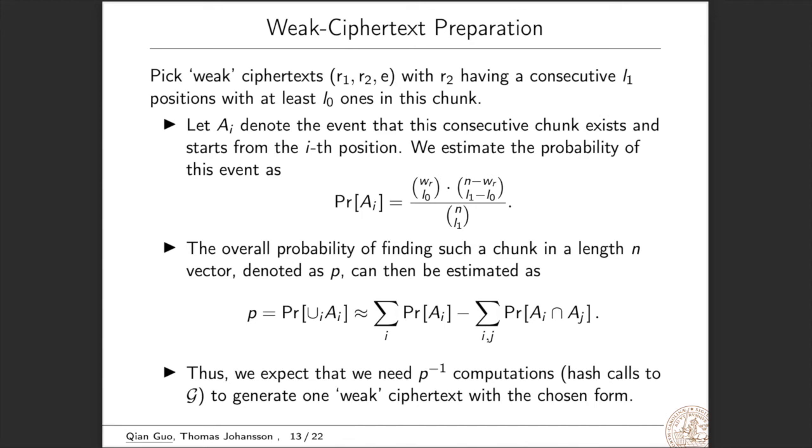As we have discussed in this section of basic ideas. For weak ciphertext preparation, we pick weak ciphertext r1, r2, e, with r2 having a consecutive L1 position with at least L0 ones in this chunk. So we need to estimate the complexity for getting such ciphertexts. Let Ai denote the event that this consecutive chunk exists and starts from the i-th position. Then from combinatorial formulas, we estimate the probability of the event as this. So, the overall probability of finding such chunk in a length n denoted as P can then be estimated as the union of these events. Thus, we could expect that we need the inverse of P computation hash calls to the hash function G to generate one weak ciphertext with the chosen form.